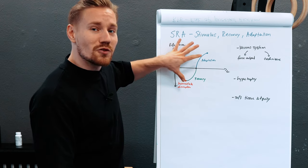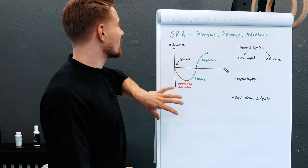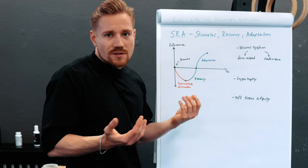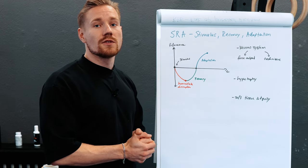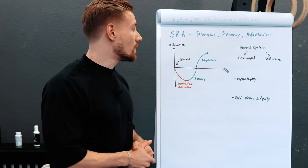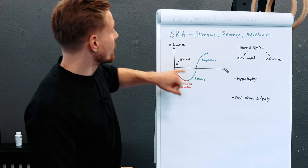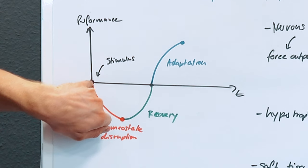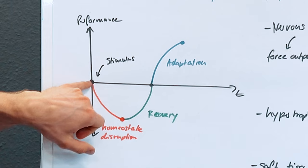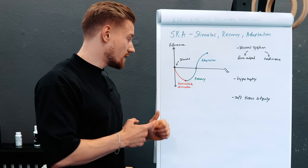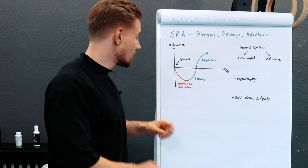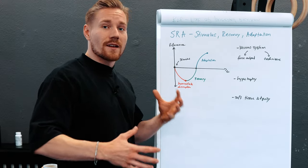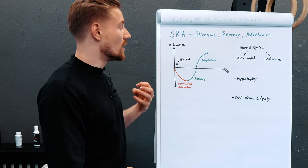So let's take a look at this graph. On this axis we have performance, and on this axis we have time. This point here is the stimulus — a training session. Depending on how heavy and how intense that session is, we get a homeostatic disruption: systems are disturbed and need to adapt over time.